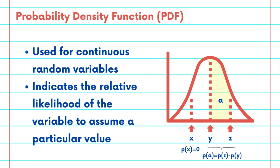For continuous variables, we use the probability density function, or PDF. It indicates the relative likelihood of the variable to assume a particular value. However, for continuous variables, the probability of a specific value is technically zero. Instead, we focus on intervals, and the area under the PDF curve between two points gives the probability that the random variable falls within that range.